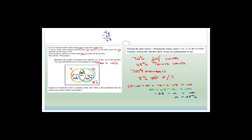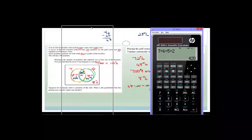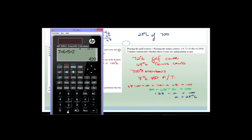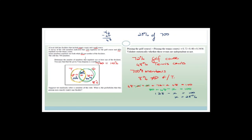The question asks for the number of members that regularly use at least one facility. We want everyone inside the Venn diagram circles. That is 100 minus 8 equals 92 percent — but wait, we're looking for at least one, which is everything except the 8 percent who use neither. So it's 92 percent of 700.